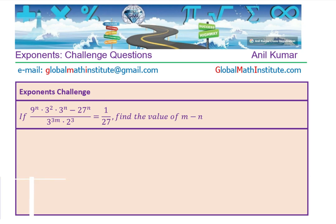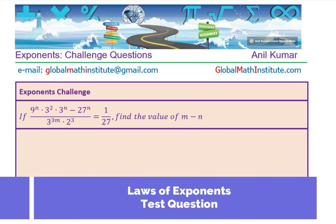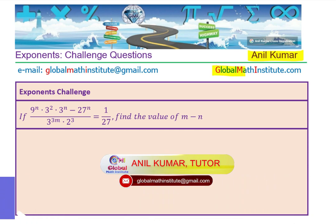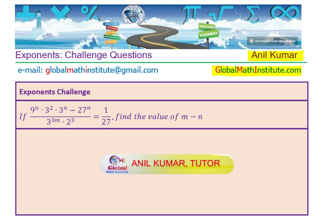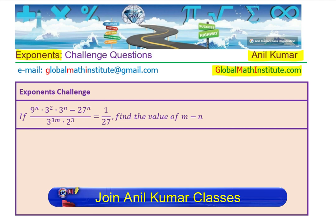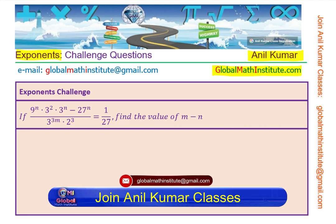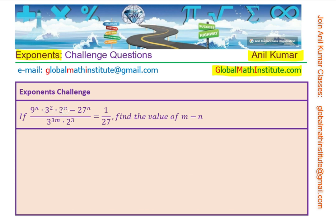Excellent test question based on laws of exponents. I am Anil Kumar, welcome to my YouTube channel and the website Global Math Institute. In this video we have a challenge question for you based on exponents. The question is: if 9 to the power of n times 3 squared times 3 to the power of n minus 27 to the power of n, divided by 3 to the power of 3m times 2q, is equal to 1 over 27, find the value of m minus n. You can pause the video, answer the question, and then look into my suggestions.